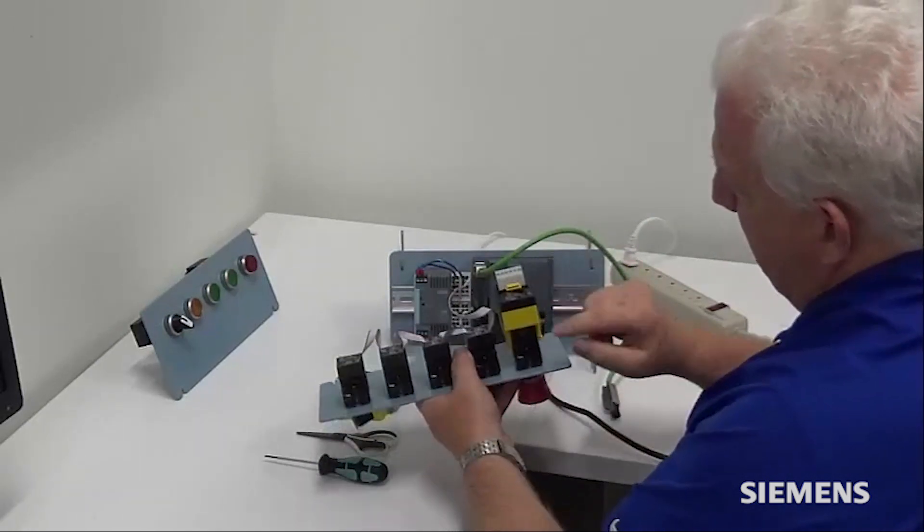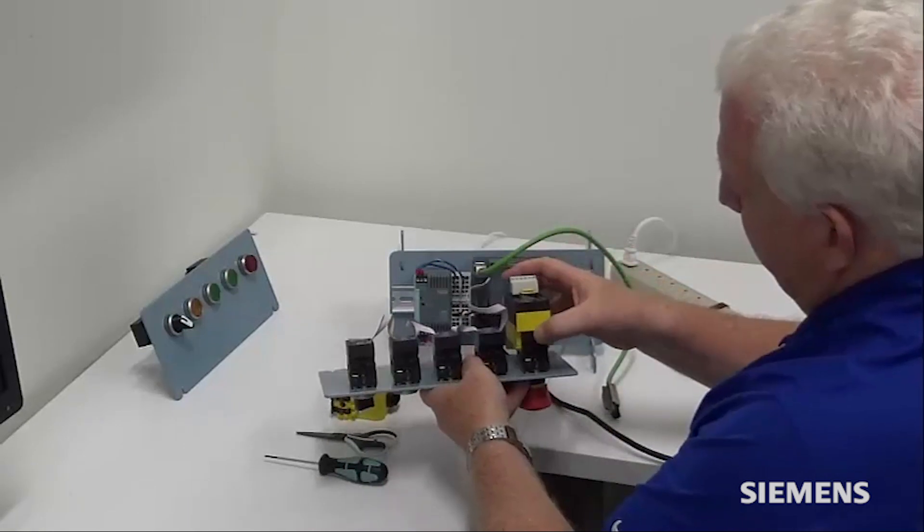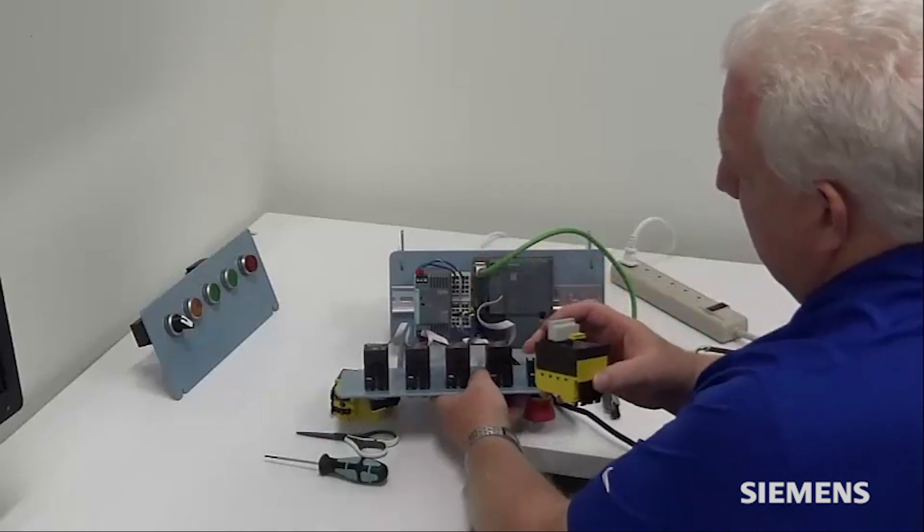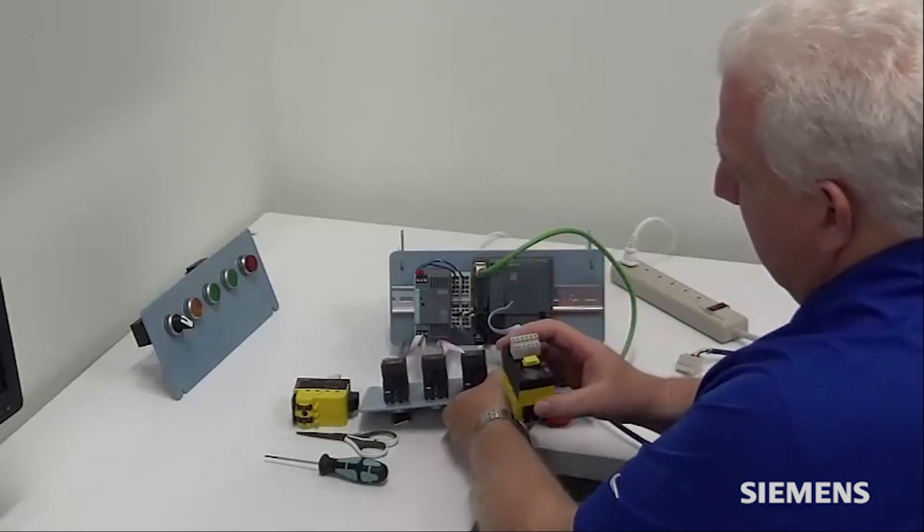To remove the interface module, there's a little tab on the back of it that you can press, rock the system down and it unhooks.